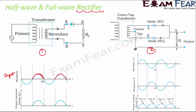During the negative cycle, the diode is reverse biased so there is no current flow. As a result, the output waveform only shows the positive half cycles. In a half-wave rectifier, the output ripple frequency equals the input frequency — the same as the frequency of the alternating current.